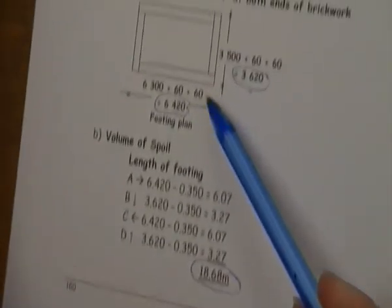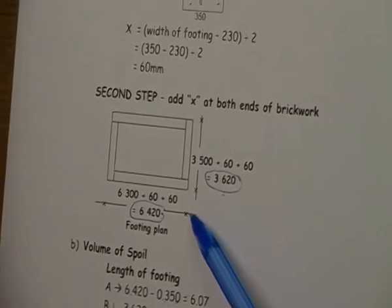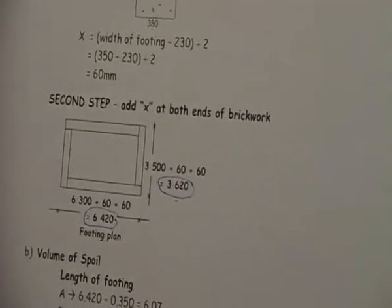The thing that we're adding to this exercise now that you haven't done before is the X factor. You have to make new plan dimensions to work out the spoil and concrete. Thank you.